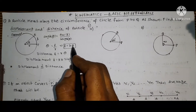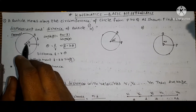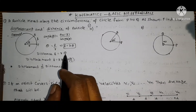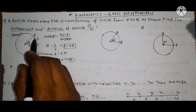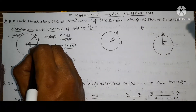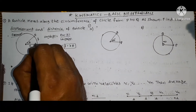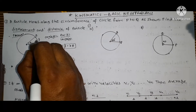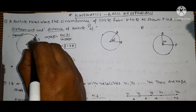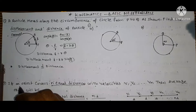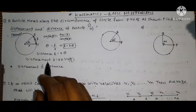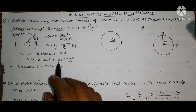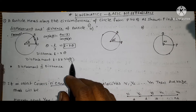Remember the formula: distance L is equal to R theta. Displacement is the shortest length between points P and Q — that is, the straight line connecting them. To determine displacement from this point to that point, we use a different formula.